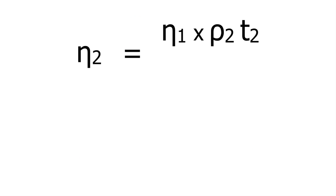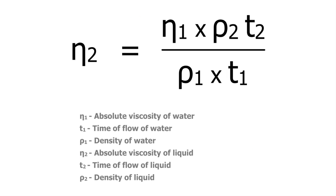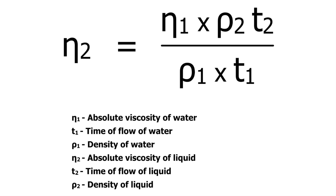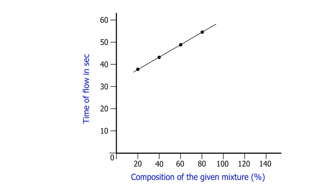The absolute viscosity of a given liquid can be found out using the formulae. Similarly, the unknown composition of a given mixture can also be found by plotting a graph of time of flow in seconds versus composition of a given mixture.